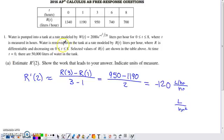Water is also being removed from the tank at a rate modeled by R(t). R(t) has the same units as W(t), liters per hour. R is differentiable and decreasing from zero to eight. Then they give us these values of R(t) in the table. R(t) at zero is 1340 liters per hour, and at eight it's down to 700 liters per hour.